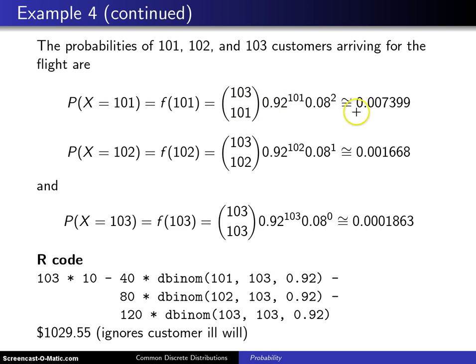So not very likely that 101 will show up. When we do this same calculation but this time with 102 you'll see that it is even less likely that 102 people will show up. And finally when x is equal to 103 it is extremely unlikely that all 103 people who purchased the tickets will actually show up.